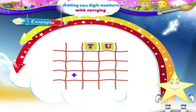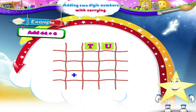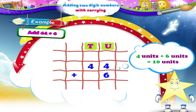The next example: add forty-four plus six. Let us arrange the numbers first. Now adding four units and six units, we get ten units. Wait, Starry! We can directly write the carried over tens in the tens column. So we write one at the top of the tens column and zero in the units place of the answer.